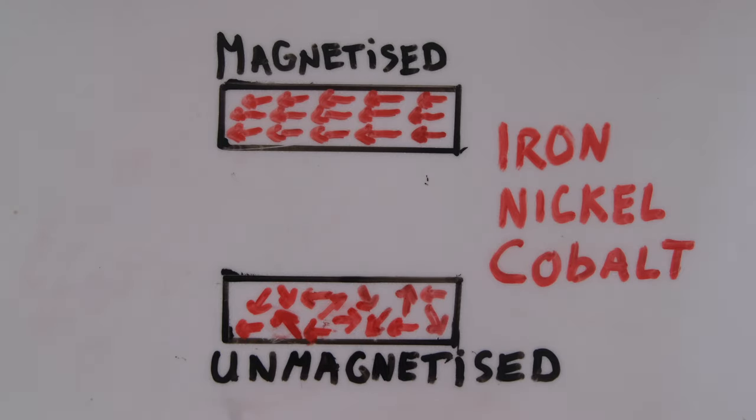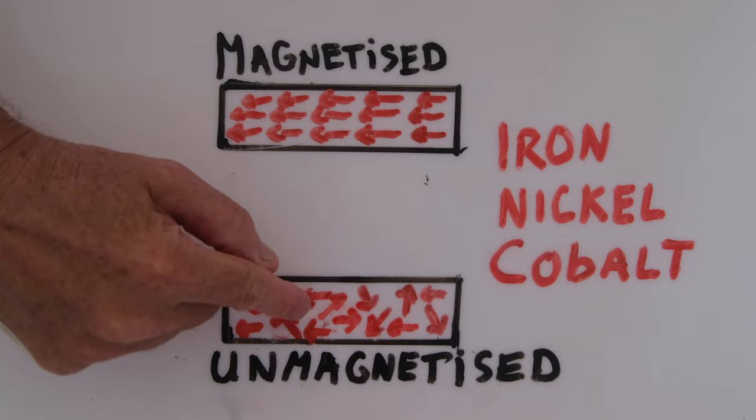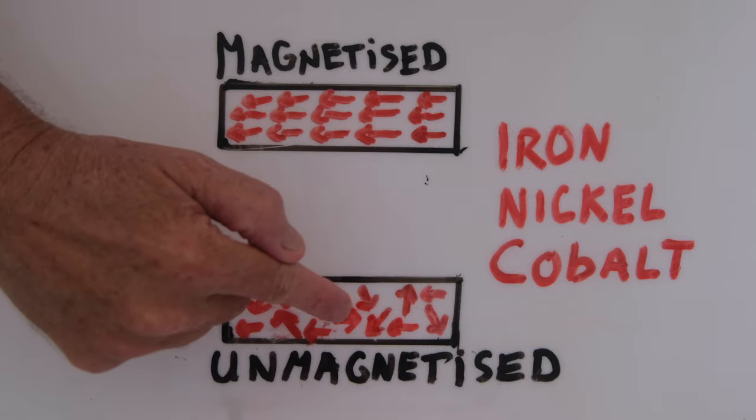When we look at just a piece of metal that is not magnetized or unmagnetized, the domains are positioned in a random direction.